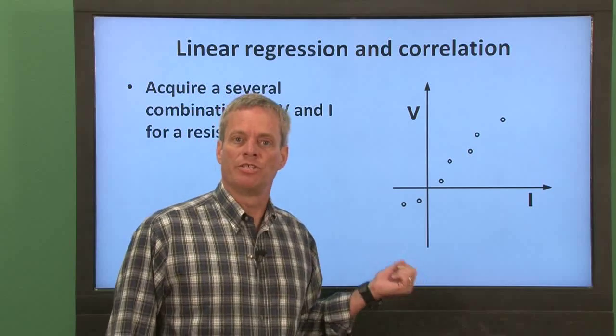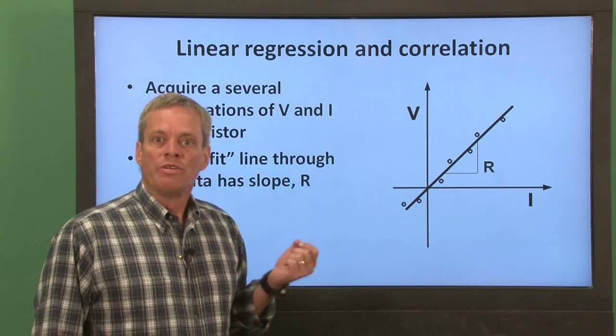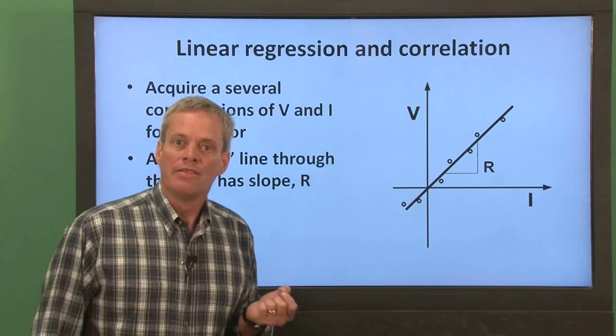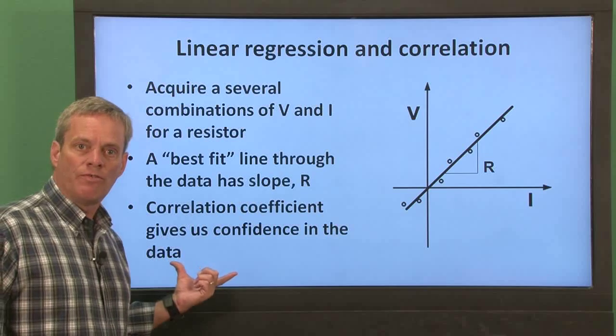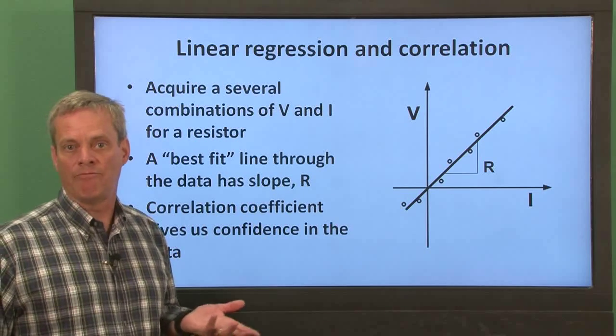In our previous example, we acquired only one piece of data from which to estimate a resistance — a single combination of voltage and current. Since errors can always creep in when we're acquiring data, any single data point is subject to an unknown amount of error. If we can acquire more combinations of voltage and current data for the resistor, we can be more certain about our confidence in the resistance estimate. Suppose we acquire a set of current data for various values of resistor voltage difference. We can plot this data and determine a best fit straight line using linear regression techniques. The resulting best fit line will have a slope R, which reflects the least overall error among the various data points. We can also calculate a correlation coefficient to quantify our degree of confidence in our estimate, and we have the opportunity to identify and discard outlying data points.